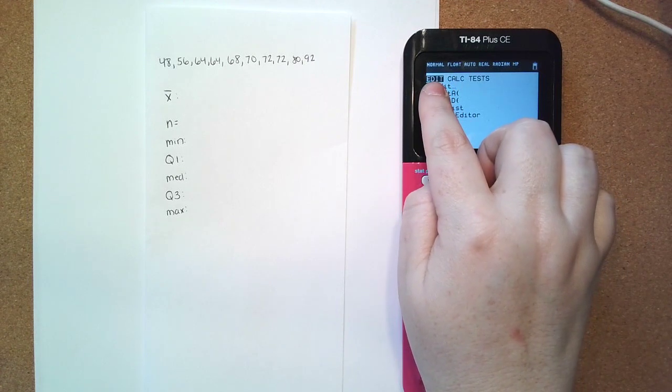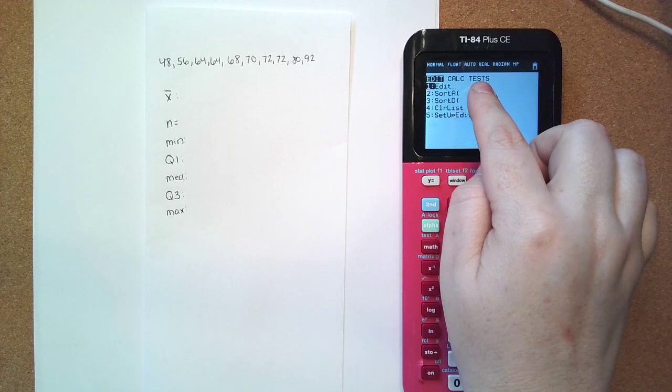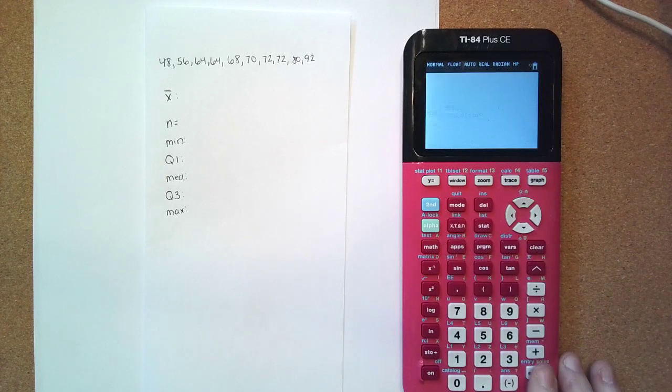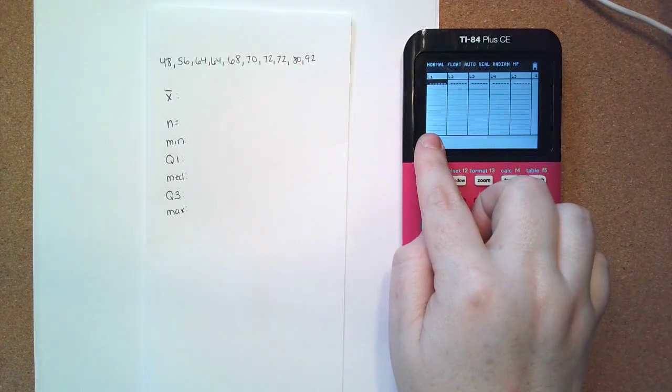So we have multiple things. This is editing our list, this is calculating information, and this is for testing statistics like hypothesis testing. So we're going to edit our first list. We have one list of numbers, so we're going to put it into our L1.